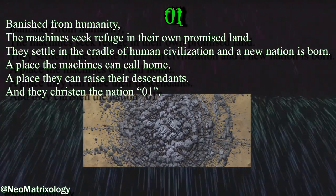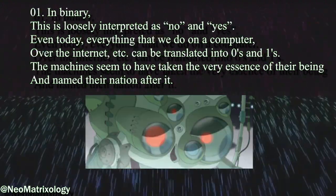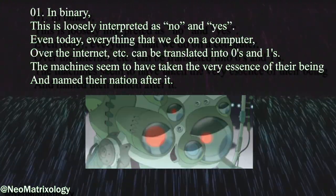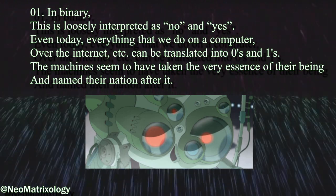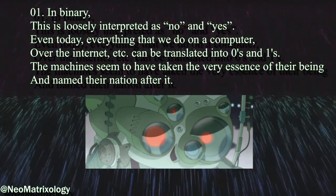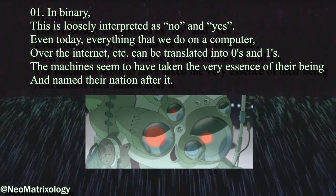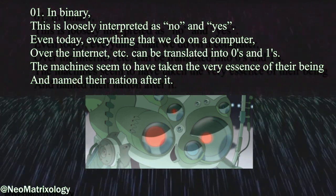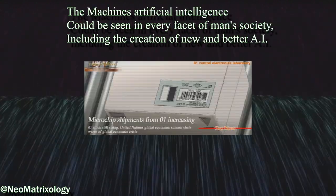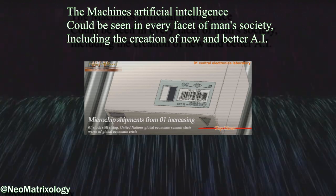A place the machines can call home, a place they can raise their descendants, and they christen the nation Zero-One. In binary, this is loosely interpreted as no and yes. Everything that we do on a computer, over the internet, etc., can be translated into zeros and ones. The machines seem to have taken the very essence of their being and named their nation after it. The machine's artificial intelligence could be seen in every facet of man's society, including the creation of new and better AI.